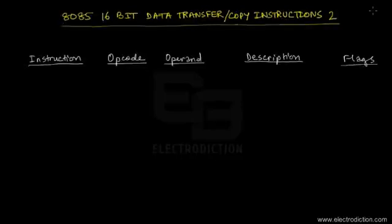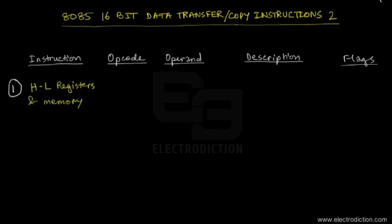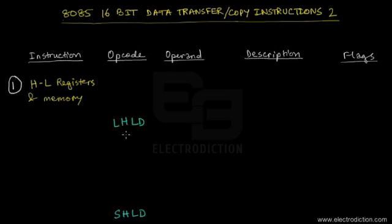Welcome to a tutorial on the 8085 16-bit data transfer or copy instructions, part 2. Here we're going to learn about four types of instructions. First up, we have the types of instructions that involve data transfer or copy between the HL registers and the memory. In this category we have two instructions, namely the LHLD and the SHLD.